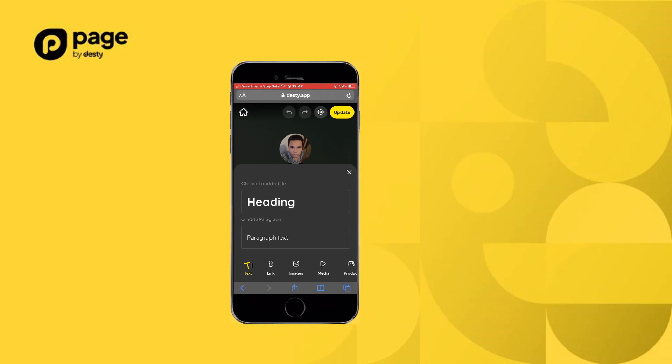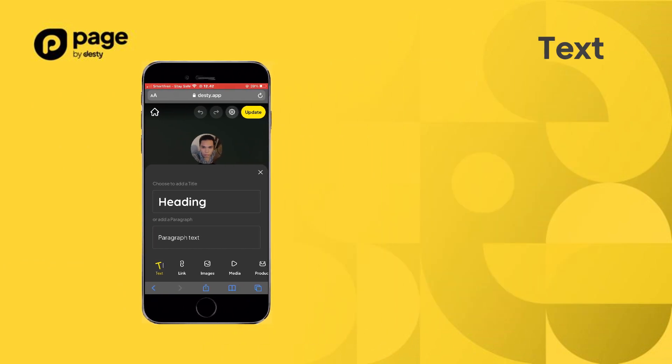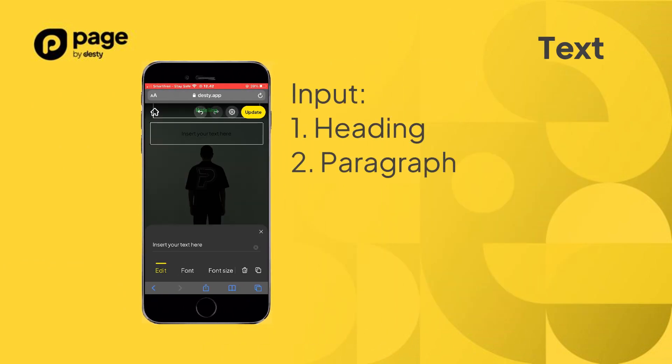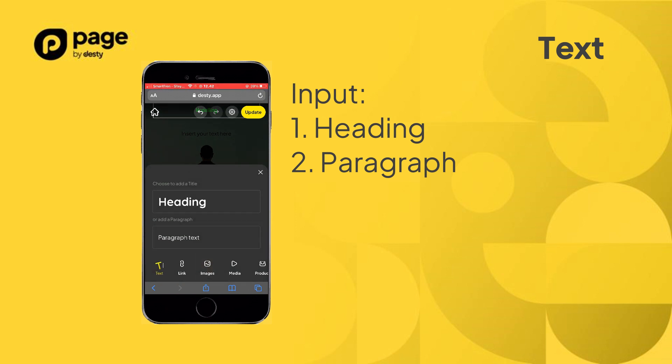The first widget is Text. Here you can choose to input a heading or paragraph, and you can insert a title or description for your page.